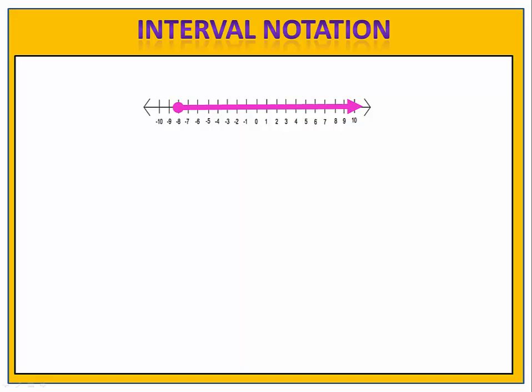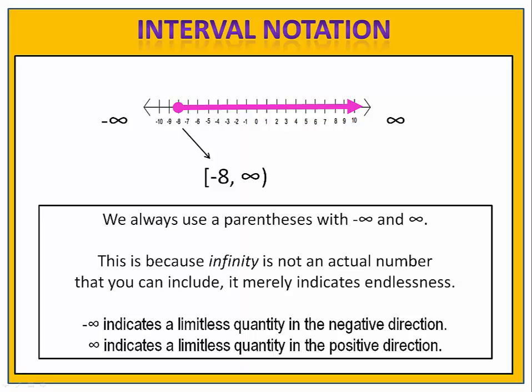What about sets that continue endlessly in one direction? We've always written the endpoints, but what if there is no endpoint? We have to use the idea that sets move forever toward infinity or negative infinity. It's important to remember that infinity and negative infinity merely indicate a direction of endless movement — these are not actual numbers. In this case, we have the set x is greater than or equal to negative 8. We begin with the endpoint negative 8, using a bracket because there's a solid circle indicating negative 8 is included. The set moves endlessly toward positive infinity, so we write from negative 8 to positive infinity. When we use an infinity symbol, we always use a parenthesis, because infinity is a direction — not an actual number — and we can never actually reach or include it.